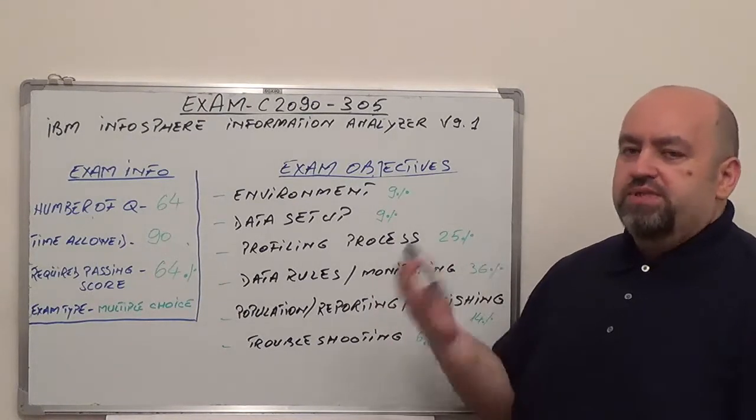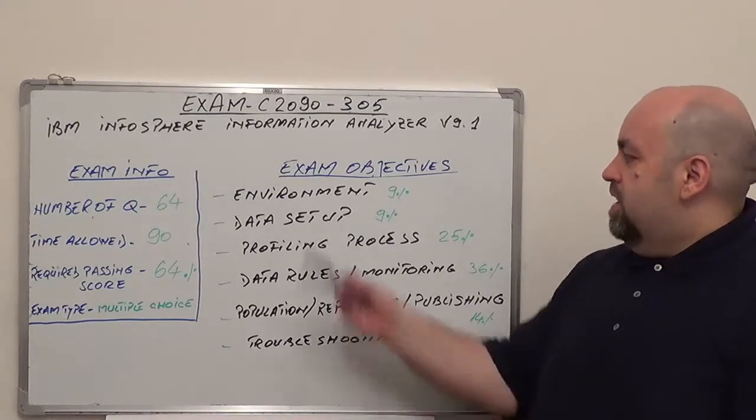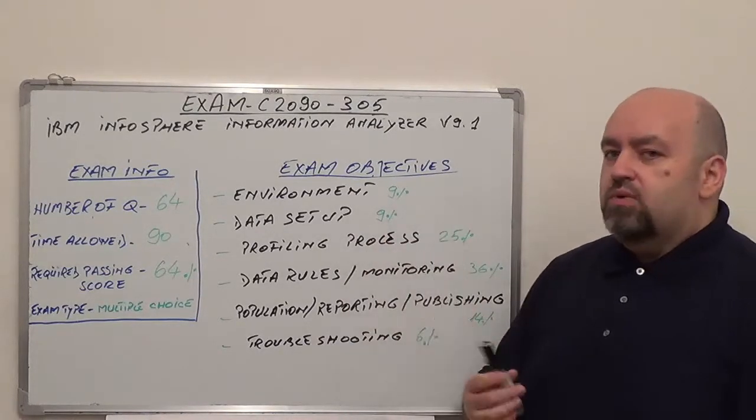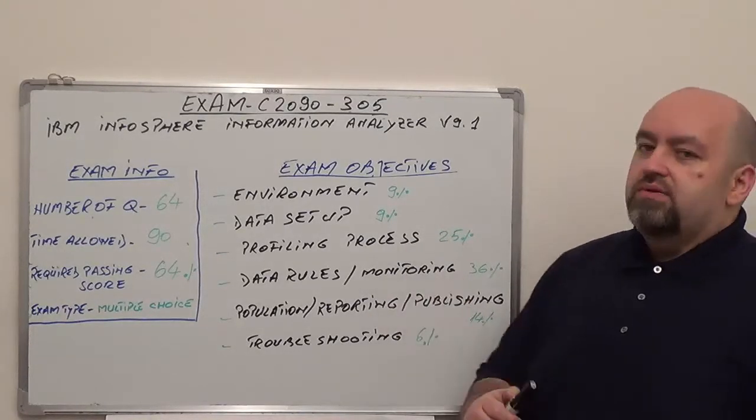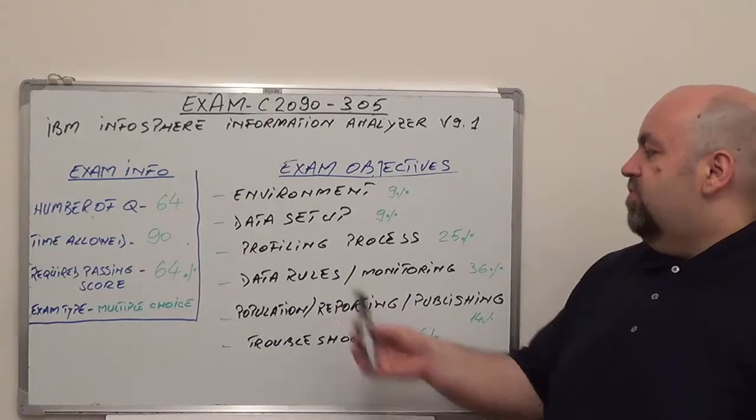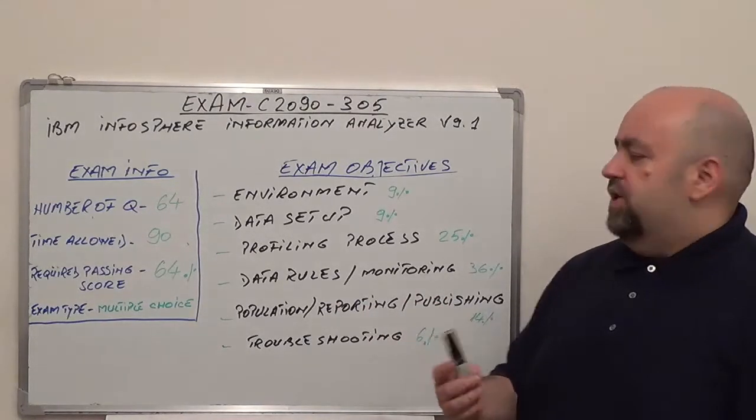In this exam, you're going to have six sections. I'm going to present three sections one by one. Let's begin with the first one: Environment, 9% of total questions. The second one is data setup, also 9% of total questions. Third one is profiling process, 25% of total questions.